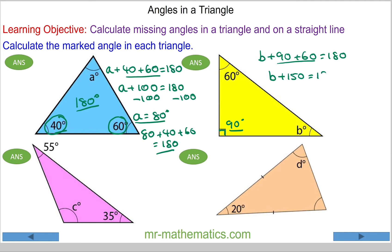We can take away the 150 because that will leave us with angle b, which is 30 degrees.